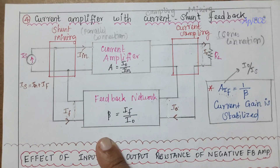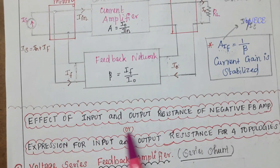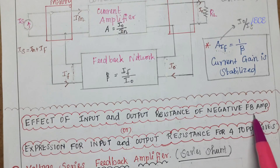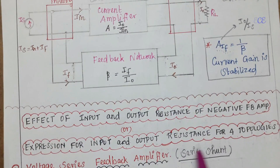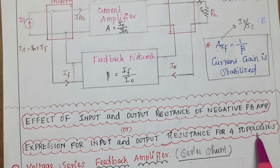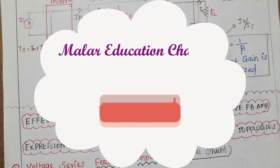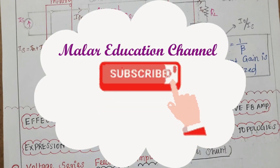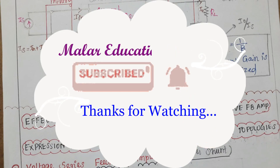That's all about today's topic. In the next video we'll discuss the effect on input and output resistance of negative feedback amplifiers, or the expression for input and output resistance for all four types of topologies. Click the bell icon to get the latest videos from Malar Education Channel. If you like this video, don't forget to subscribe. Thanks for watching.